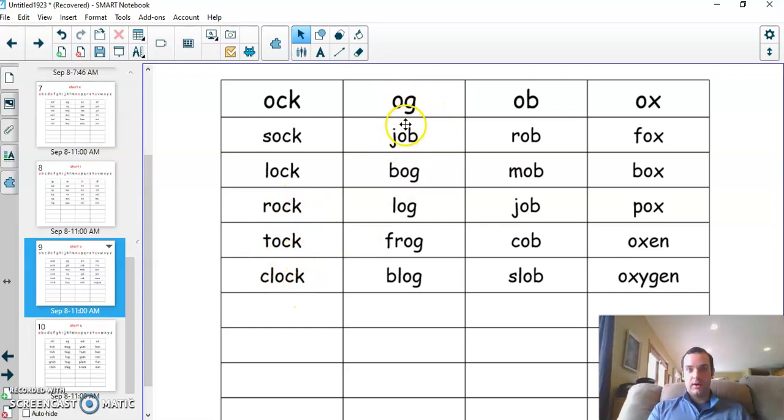O-g ending. This should say o-g, but then we got, this should say jog. Looks like a little error. It's okay. Bog, log, frog, blog.